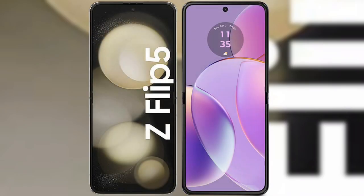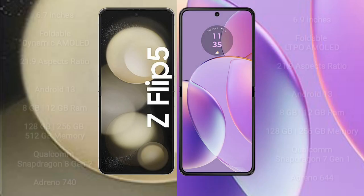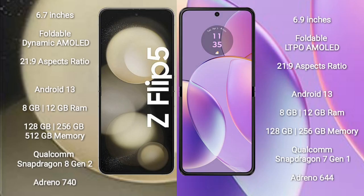I will compare the new Samsung Galaxy Z Flip 5 with Motorola Razr 40. Samsung Galaxy Z Flip 5 comes with a 6.7-inch foldable Dynamic AMOLED display with an aspect ratio of 21.9. Motorola Razr 40 comes with a 6.9-inch foldable LTPO AMOLED display with an aspect ratio of 21.9.